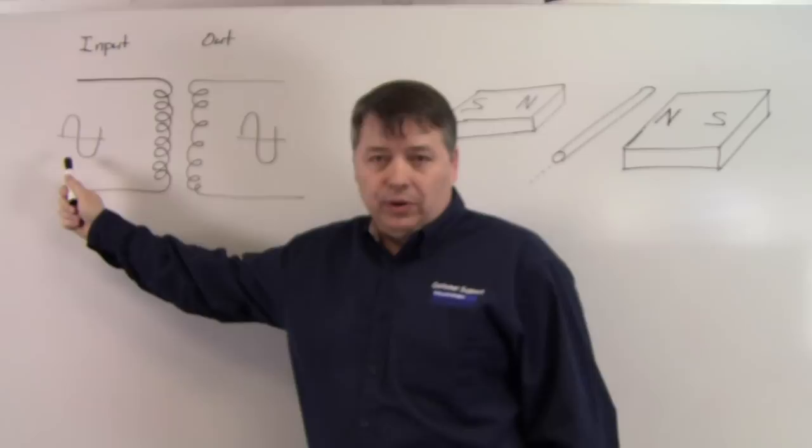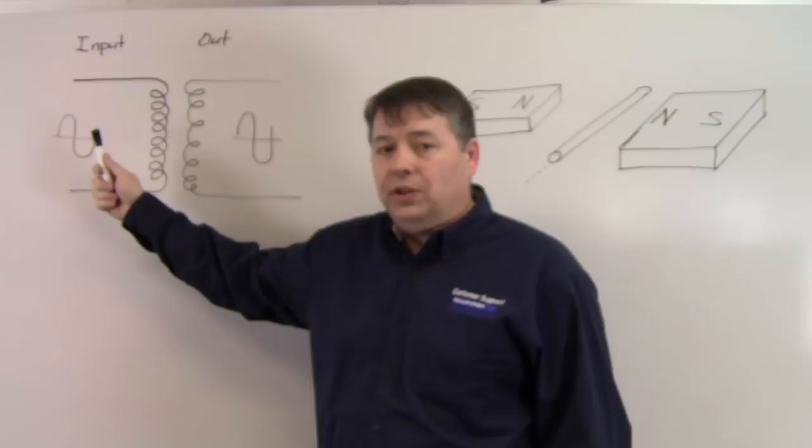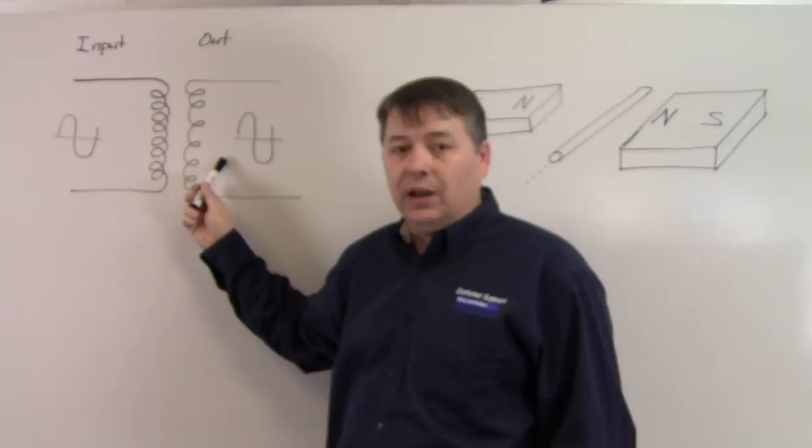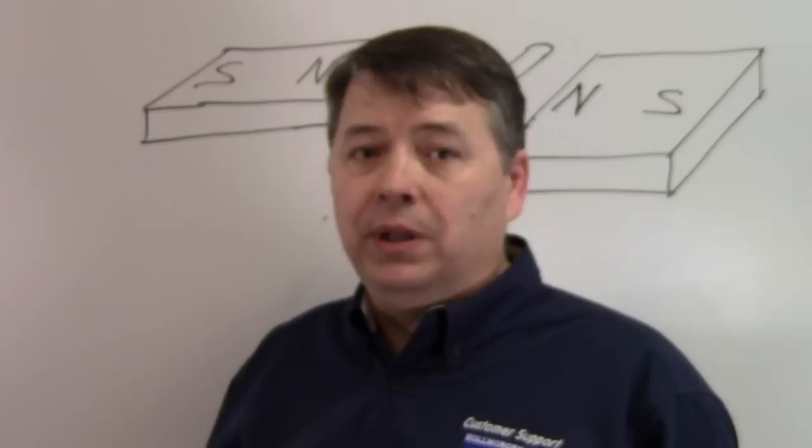If we input an alternating current or AC current into a transformer on the input known as the primary, as that field continually increases and decreases going from plus to minus, the flux lines will be cutting through the windings of the output known as the secondary. Keep in mind that a transformer can have many outputs, all called secondaries, and the output of one transformer can be connected to the input of another transformer.